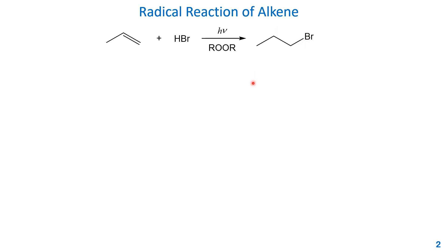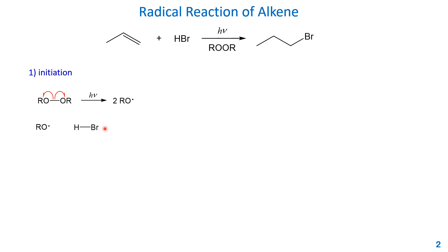Let's look at the mechanism. The initiation step is the peroxide undergoing homolytic cleavage of the single bond between the two oxygens, assisted by light, to form two alkoxy radicals. This alkoxy radical can then react with hydrogen bromide, and the single bond between hydrogen and bromine splits into two radicals. The hydrogen radical combines with the alkoxy radical to form an alcohol, and the other radical is the bromine radical.